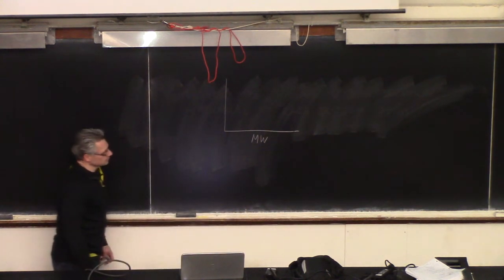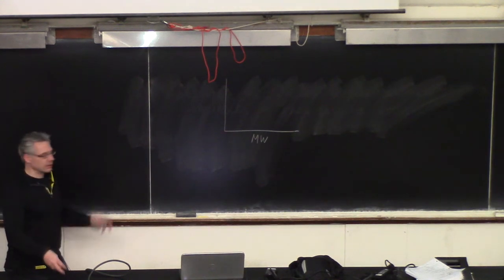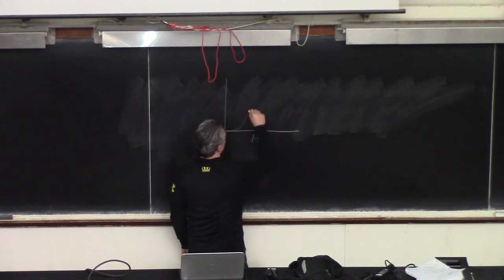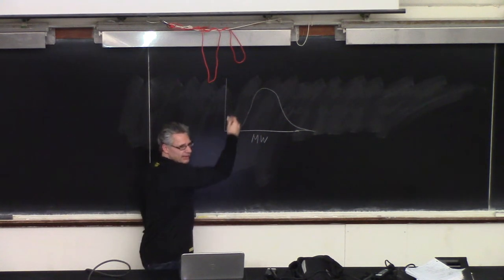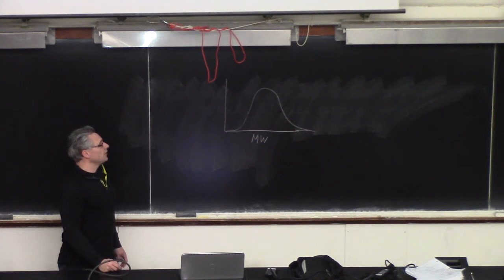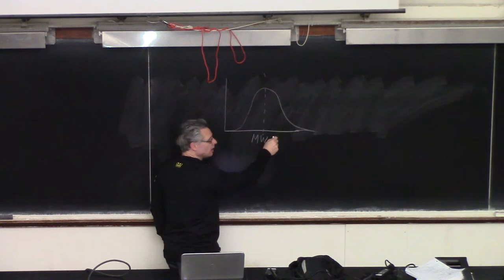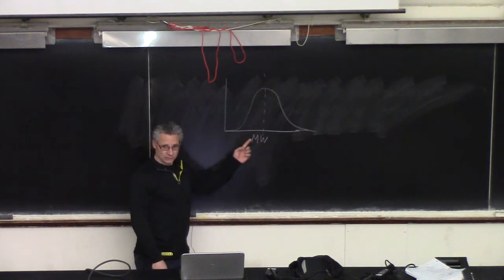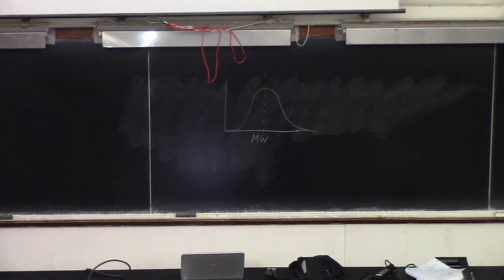If you pulled out 1,000 chains of polymer and measured how long they were, you'd find some shorter and some longer — they're not all the same length. They follow a distribution that might look roughly normal: molecular weight on the x-axis, frequency on the y-axis. Someone buying the polymer wants the right average molecular weight and won't want the distribution to be too broad.